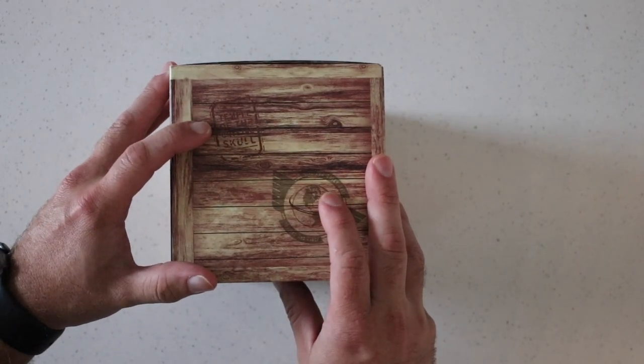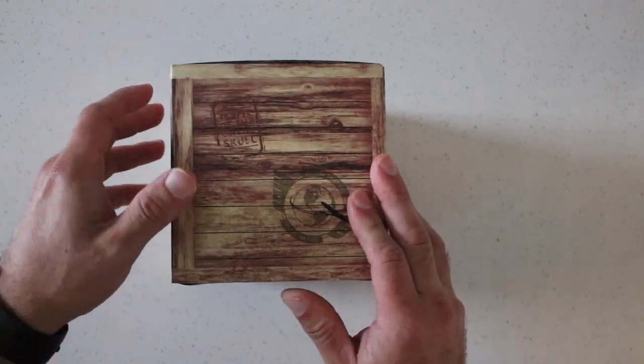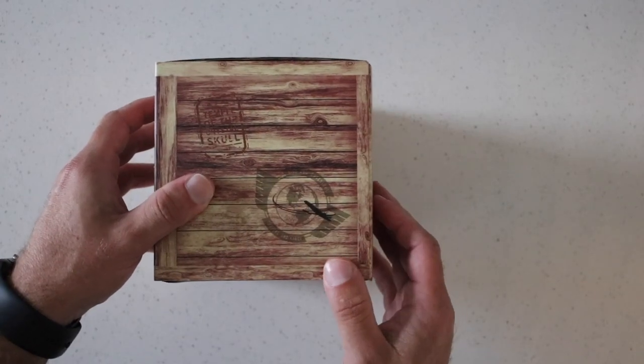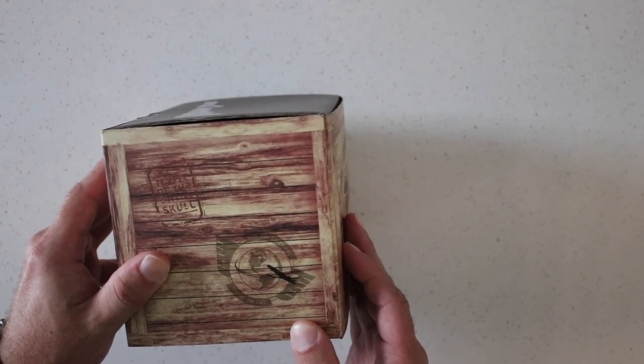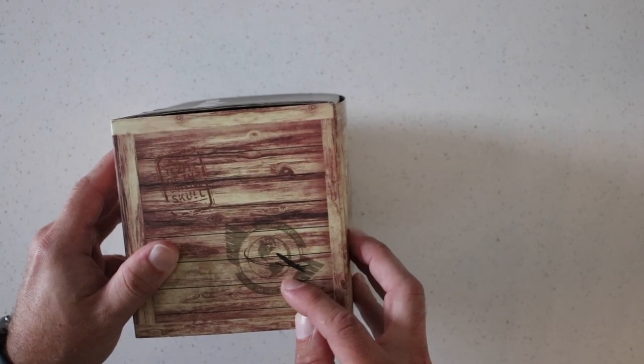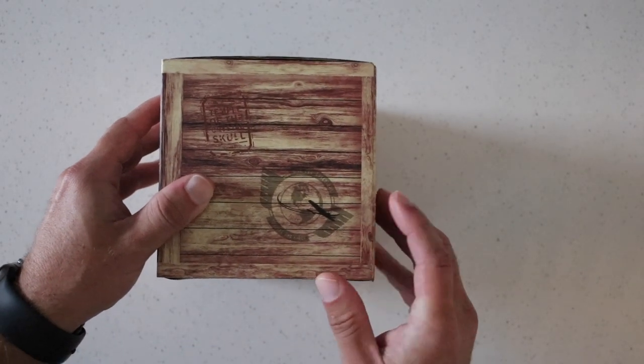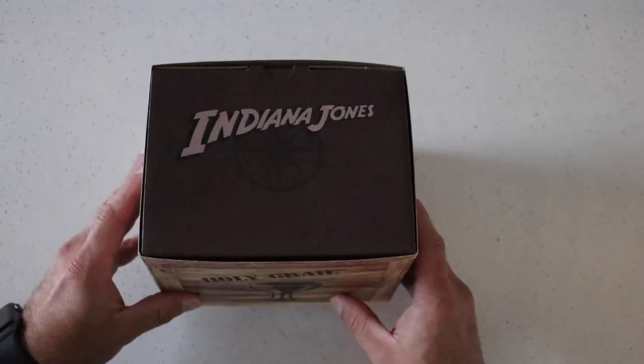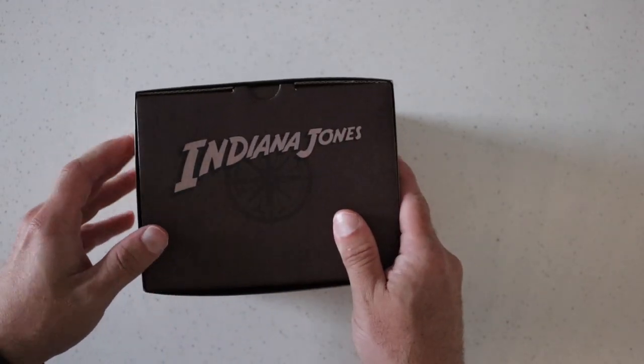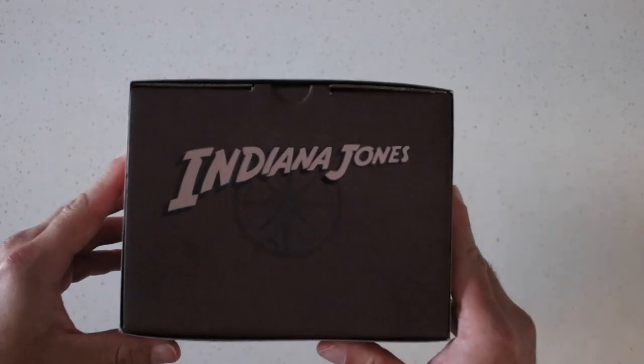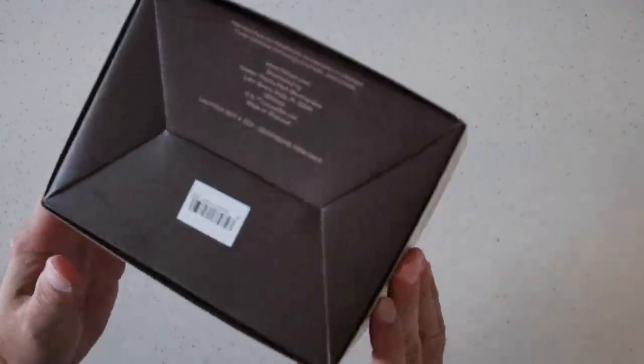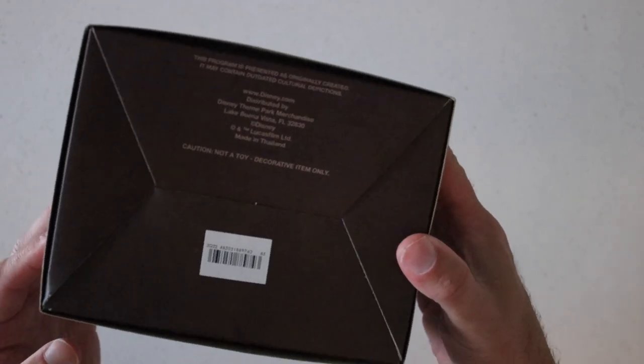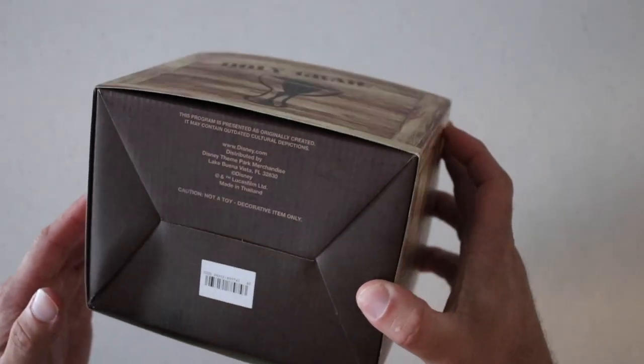This is Temple of the Crystal Skull. I believe that's the one over in DisneySea over in Japan. And then it says, Live for Adventure, Fortune, and Glory. Famous Indiana Jones sign. And then, of course, we have the Indiana Jones logo there. And onto the bottom, just the regular, normal print that we always see.